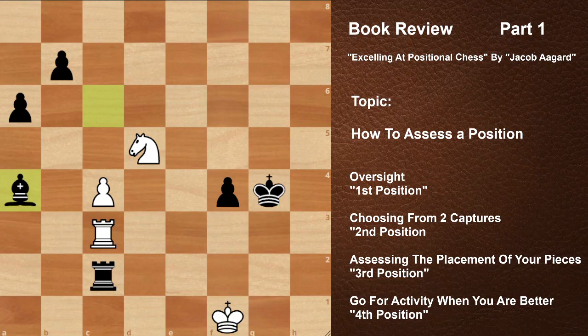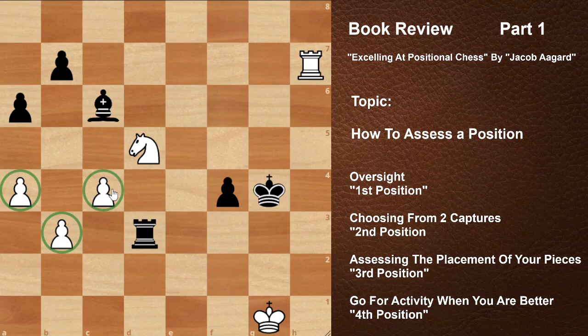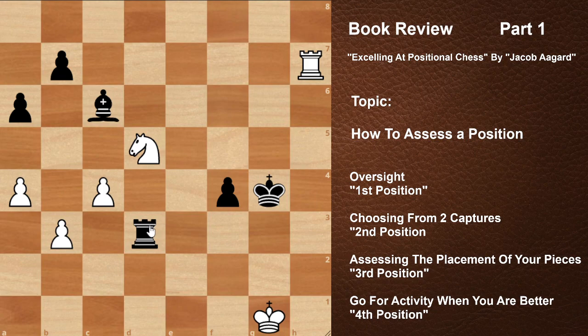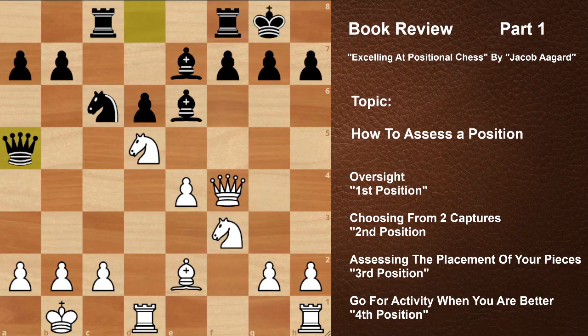Remember: if your opponent has three connected pawns, try to break them — that is the key idea. If they have connected pawns, whether three or four, try to break them. There are certain rules where a passed pawn must be taken, but if the position is roughly balanced and you have an edge, try to break the connected pawns.